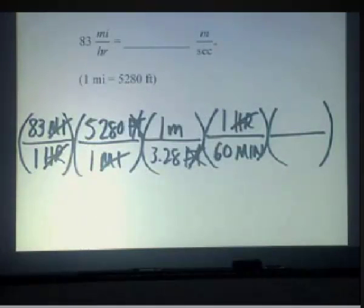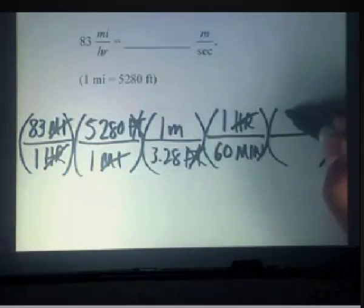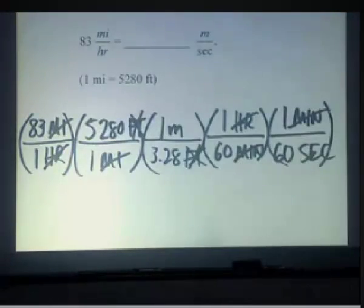So we now have our label in terms of meters per minute. Now we want to get that in terms of seconds. We know that in one minute, there are 60 seconds, and this finishes out.